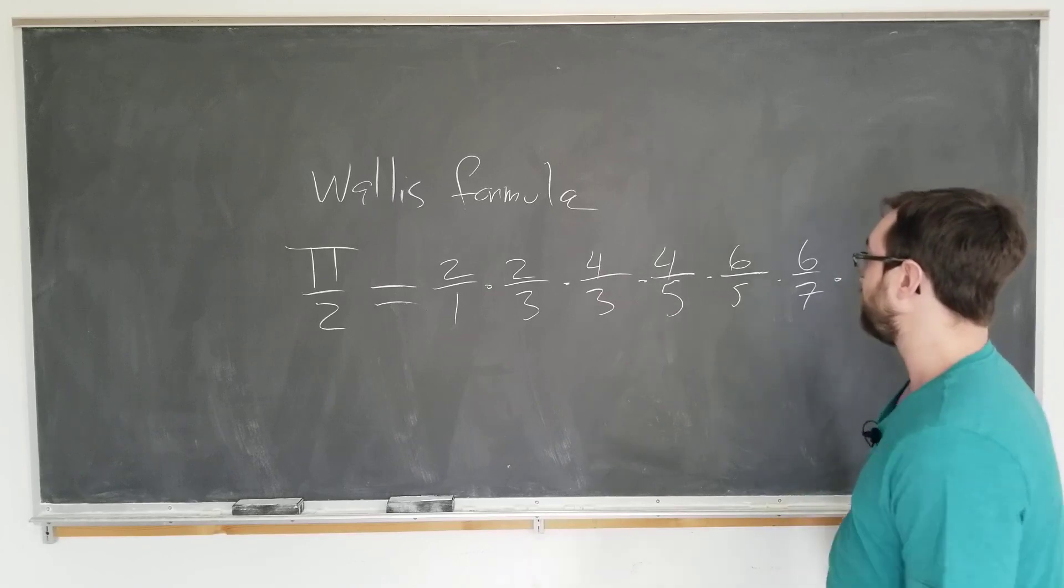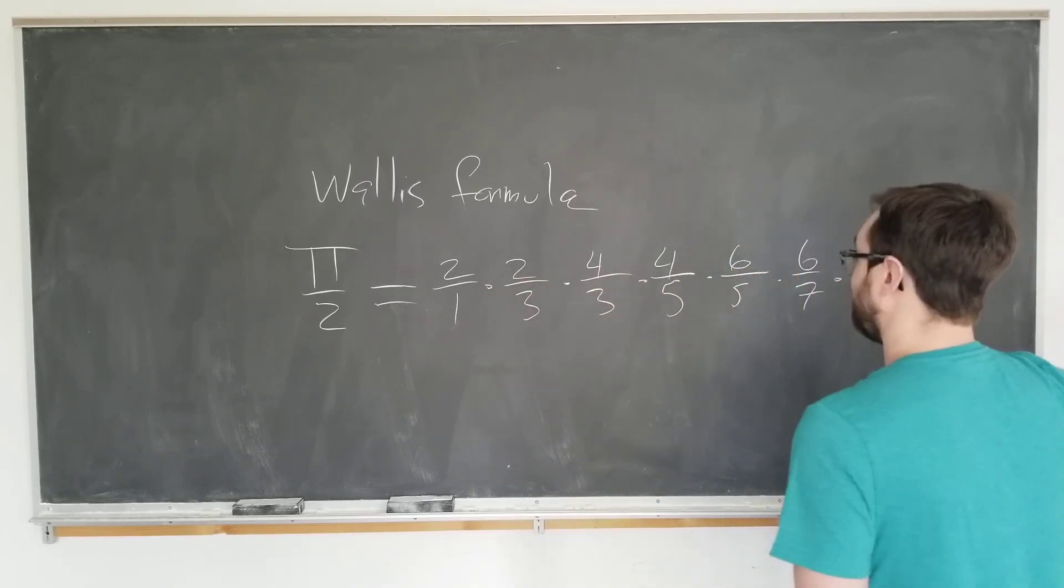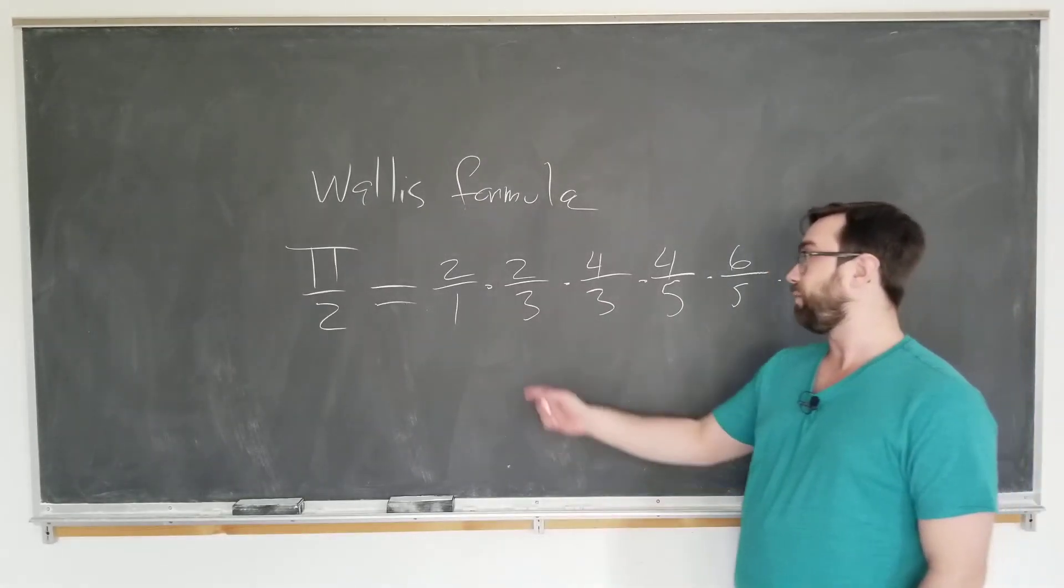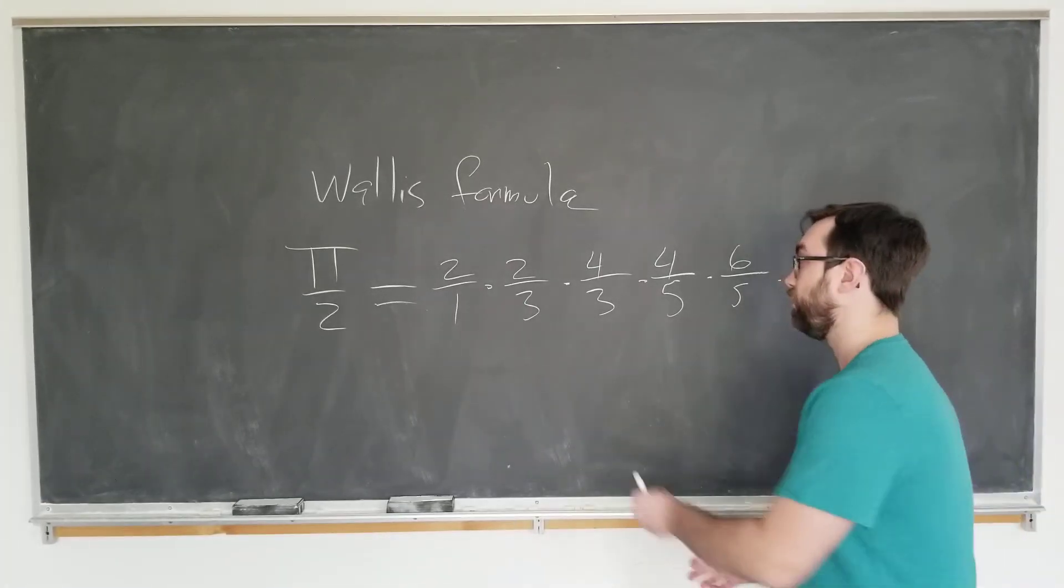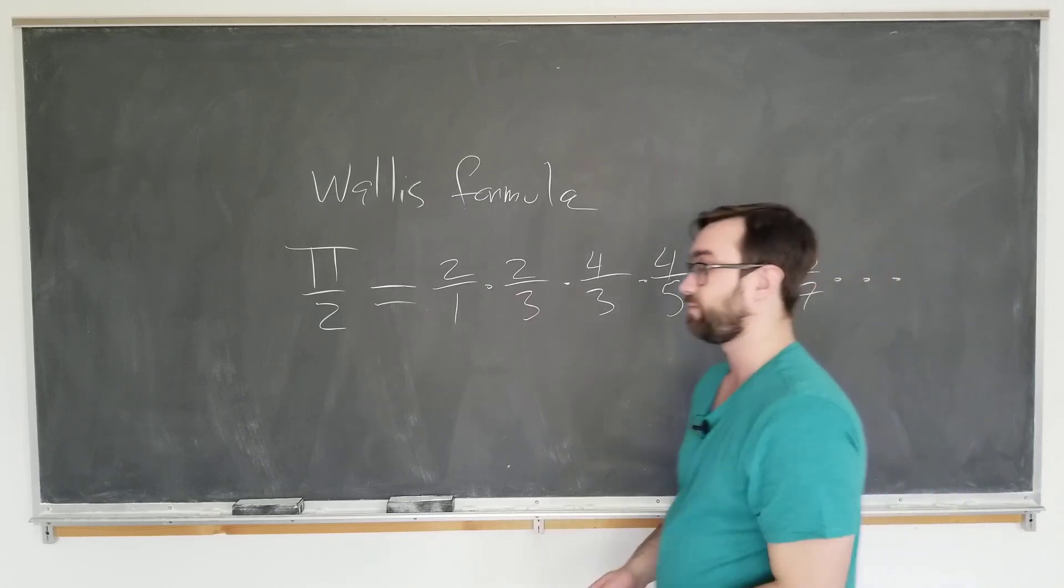And you see the pattern? So we start at the top with the even numbers: 2, 2, 4, 4, 6, 6, 8, 8, etc. On the bottom, we have the odd numbers, but instead of repeating 1 twice, we only repeat it once for reasons which we'll see later: 1, 3, 3, 5, 5, 7, 7, 9, etc., on to infinity.